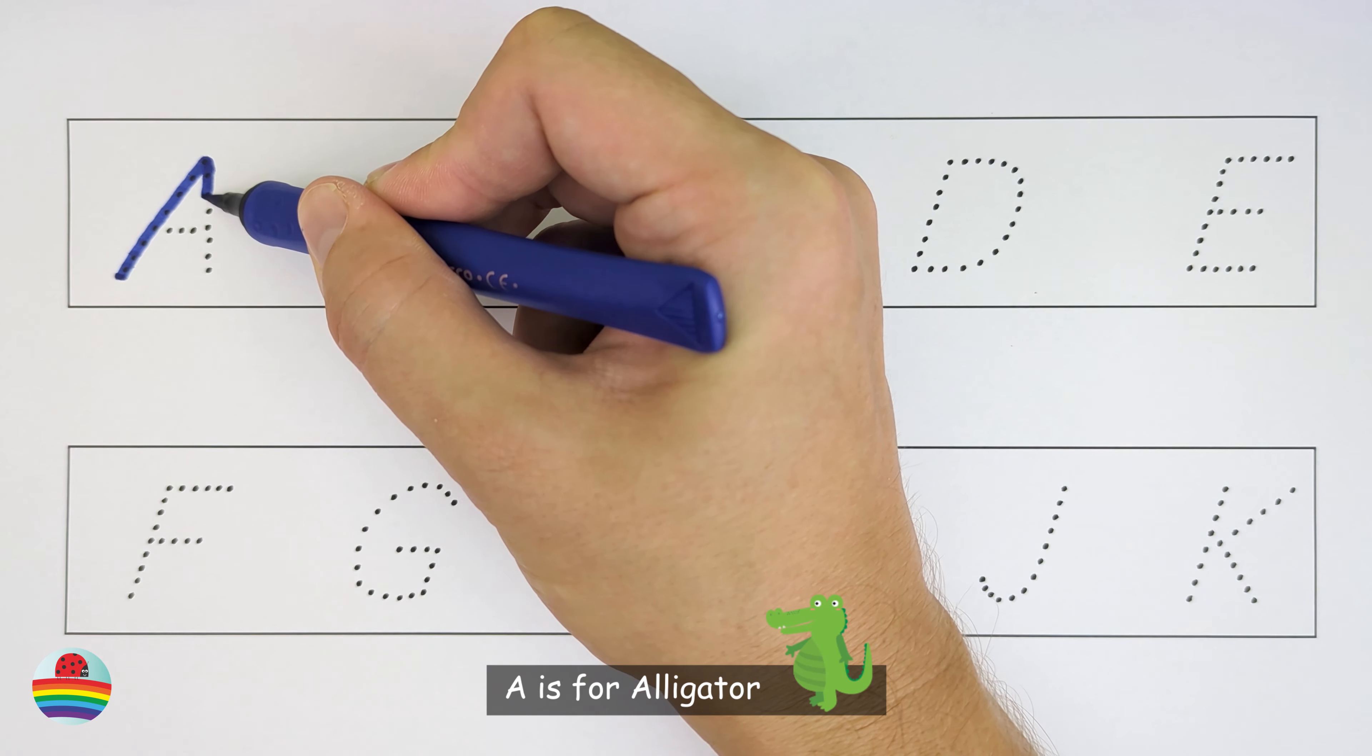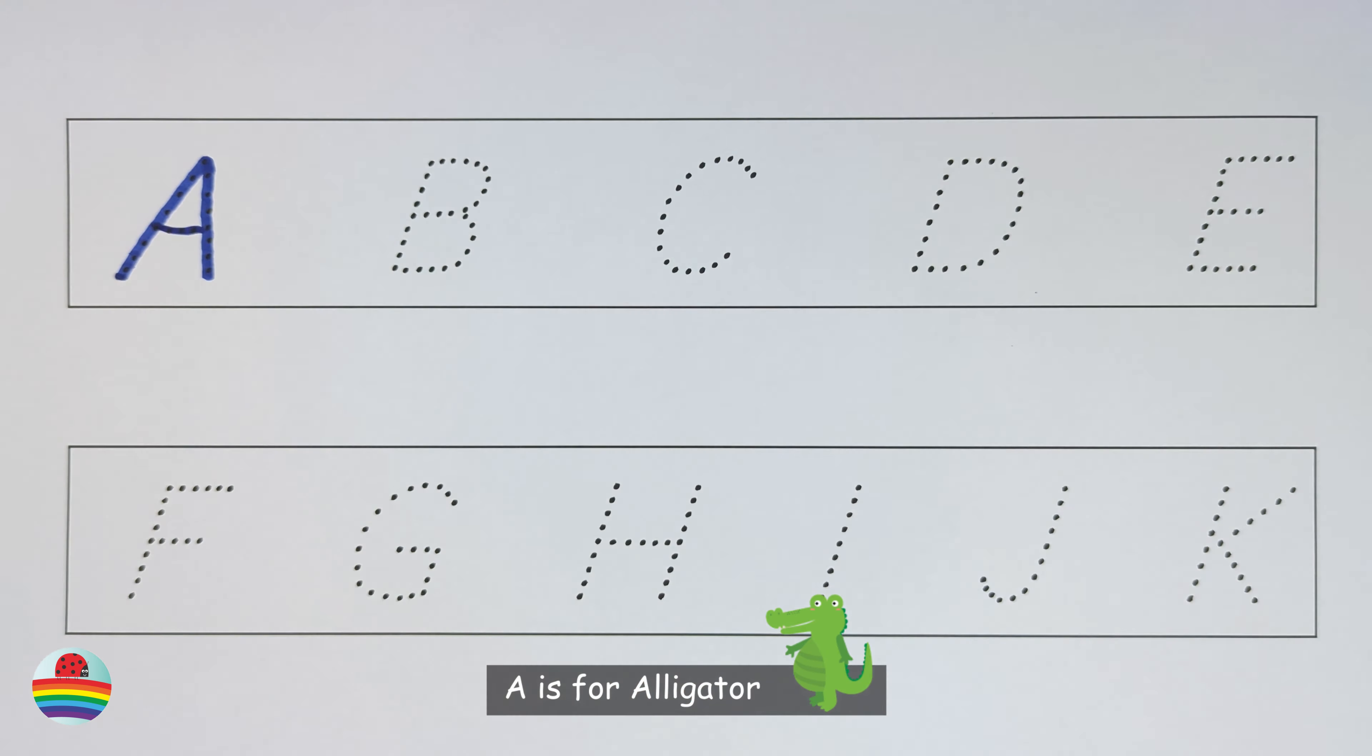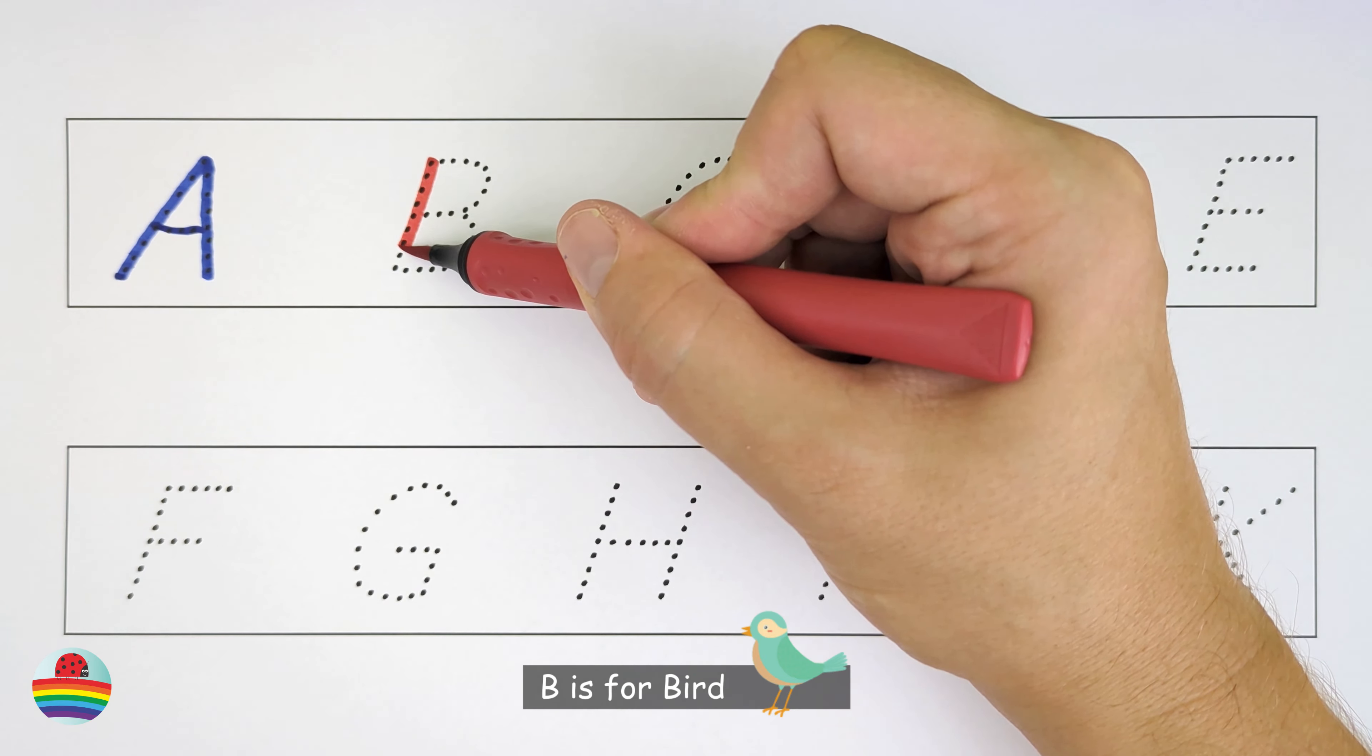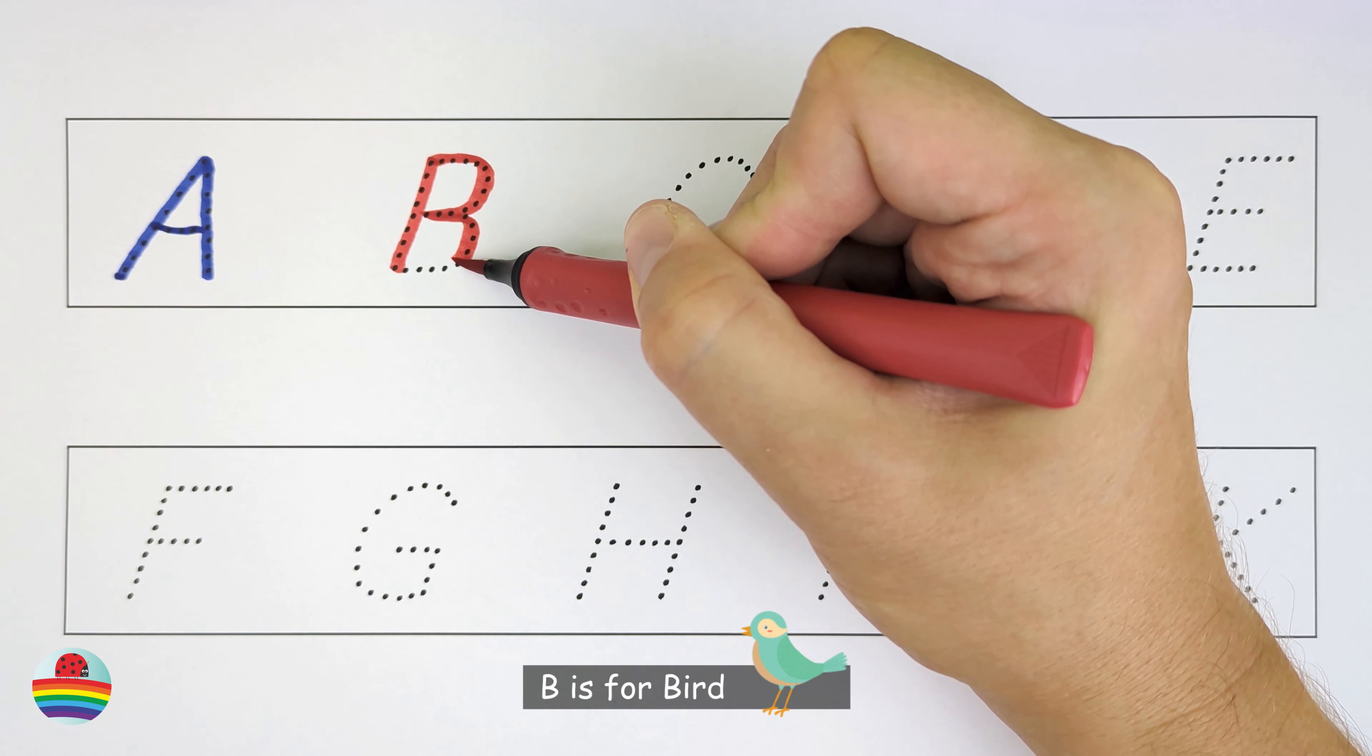A. A is for alligator. A. B. B is for bird. B.